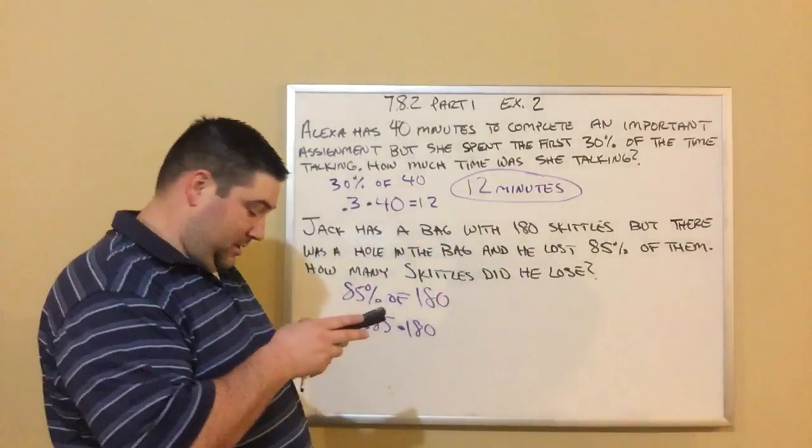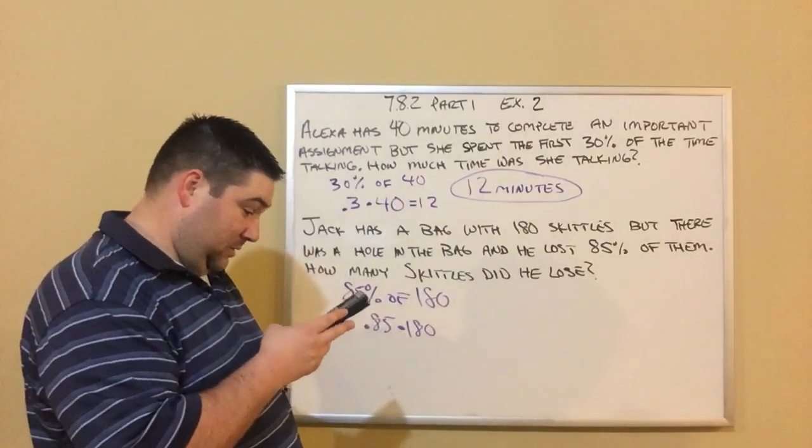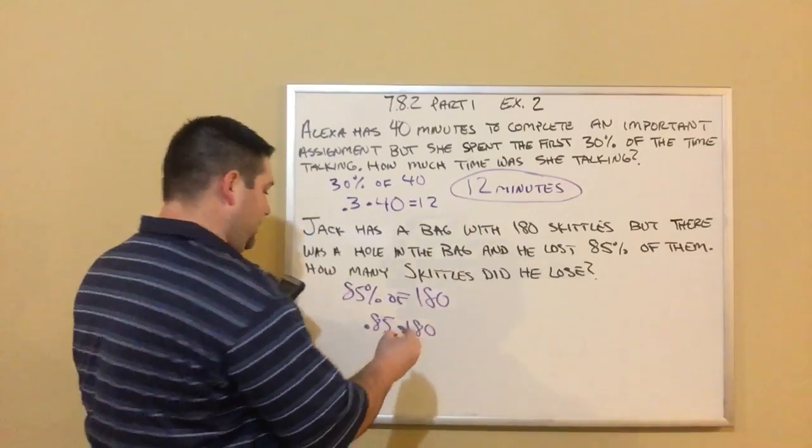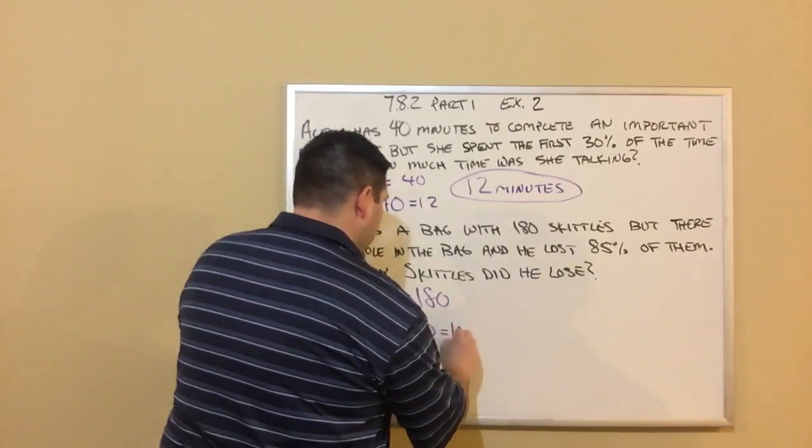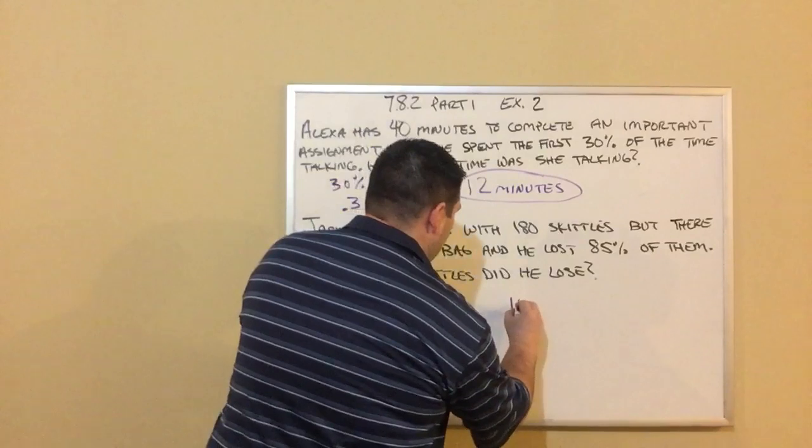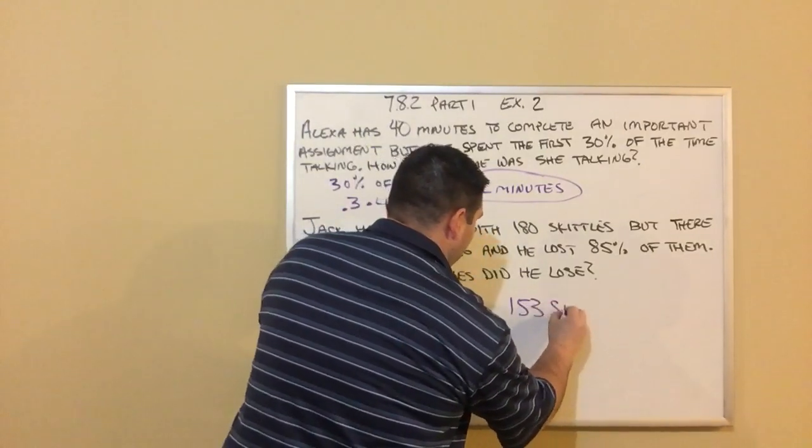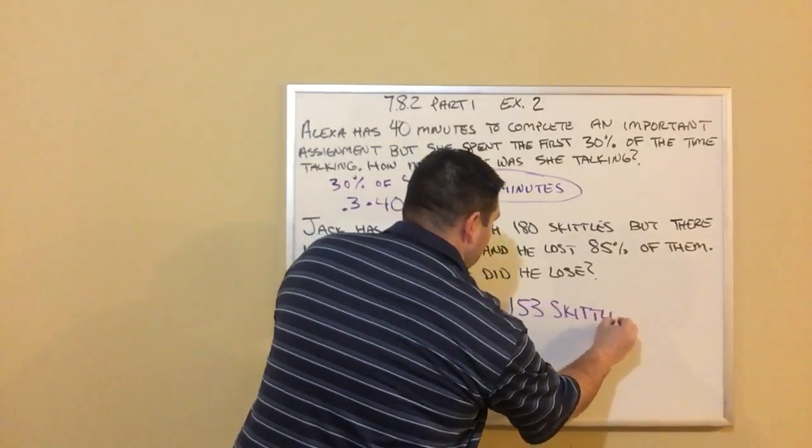If I get my calculator here, 0.85 times 180, that's 153. So we figure out that he lost 153 Skittles.